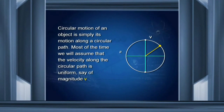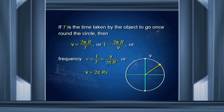Here, you have an object moving in a circle. If the velocity is v, then the time period is 2πr/v, where r is the radius. The frequency ν is 1/T, which is v/(2πr), or we can write v as 2πrν, where ν is the frequency.